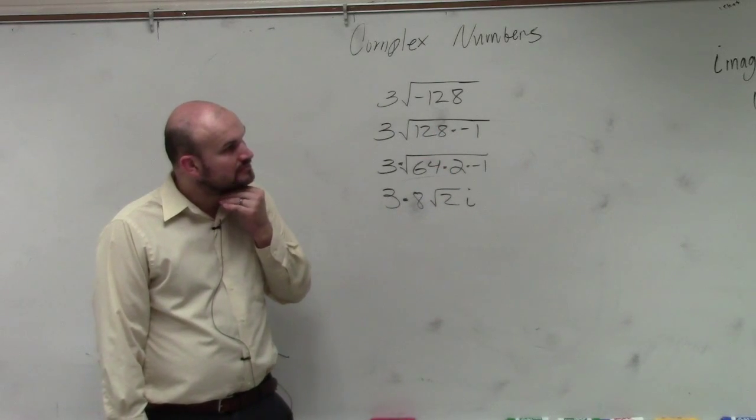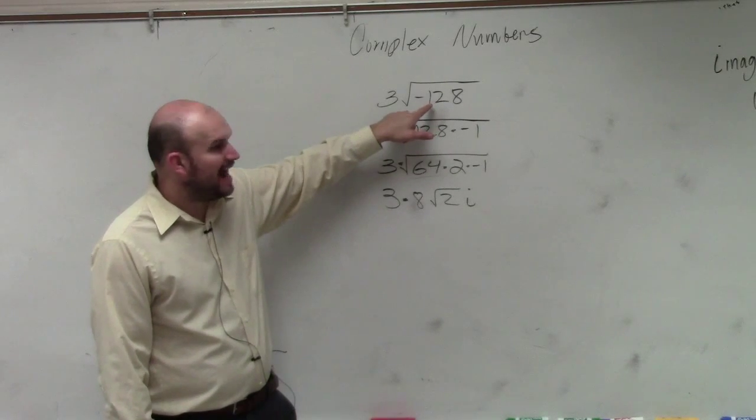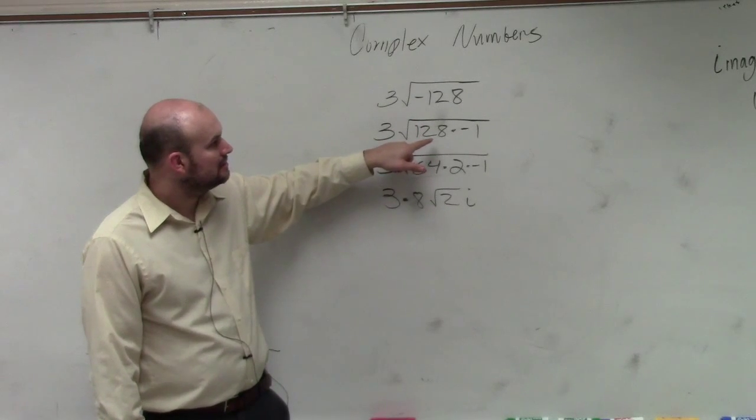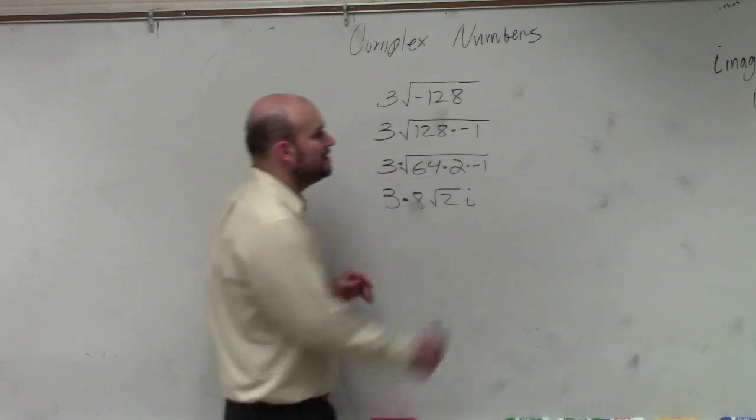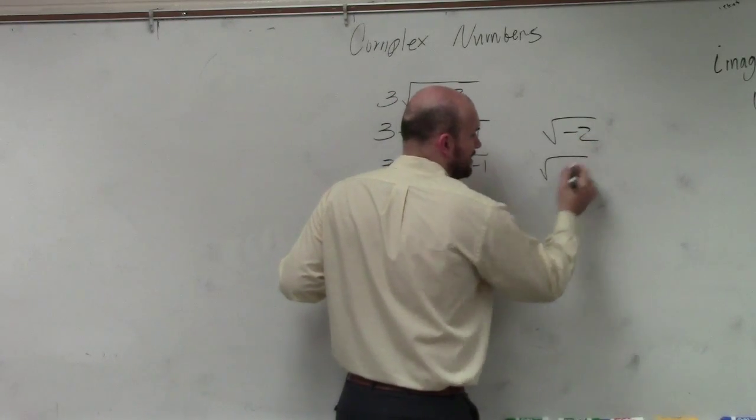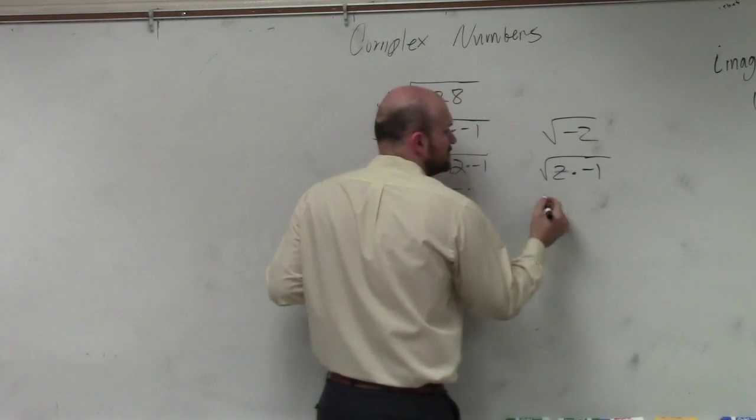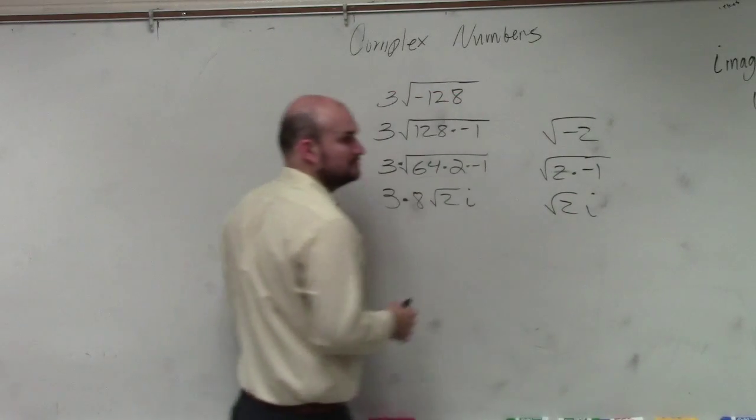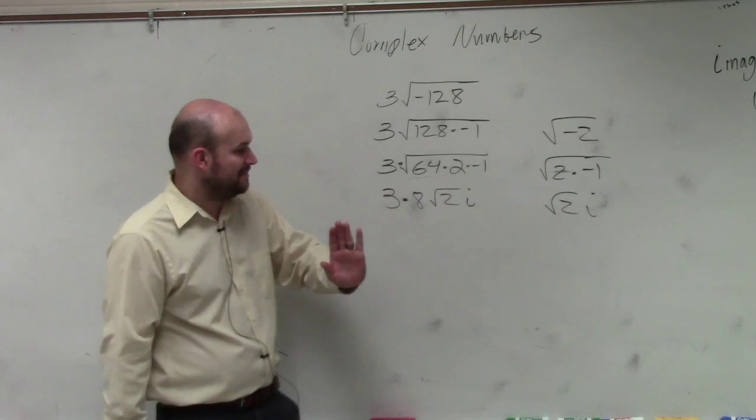Does i represent only negative 1? And does it also represent other negative 1? Well, that's what I'm saying. This doesn't equal i. But could you say that negative 2 equals i? No. What do you mean negative 2 equals i? No. Square root of negative 2 is equal to the square root of 2 times negative 1. Square root of negative 1 is i. Square root of 2, i. OK? i represents the negative square root.